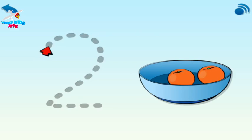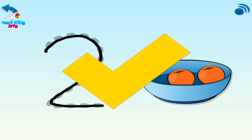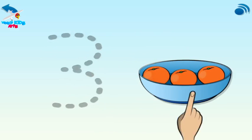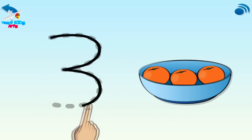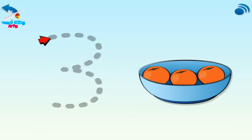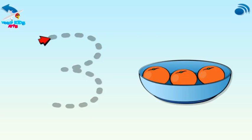Now trace it again. Three oranges in the bowl. Three, your turn. Trace three. Now trace it again.